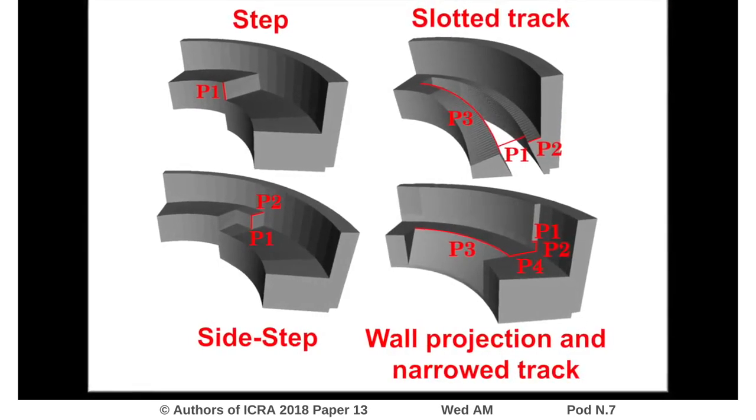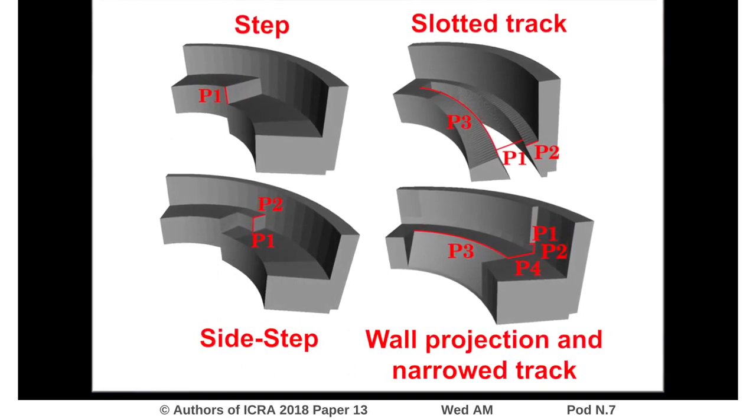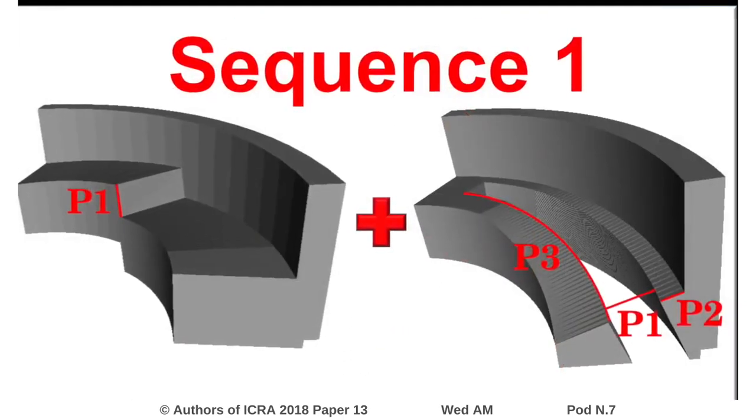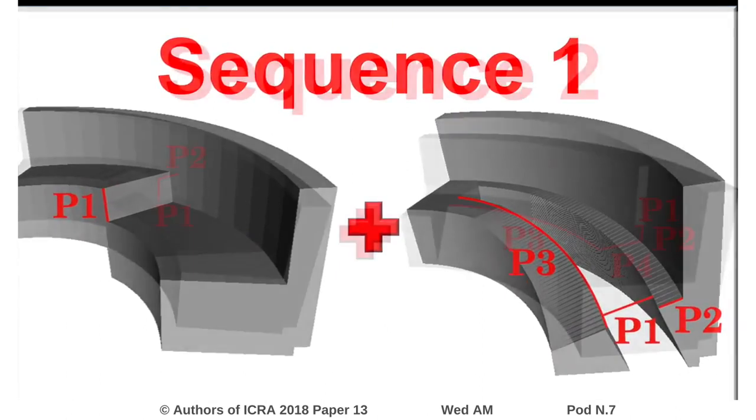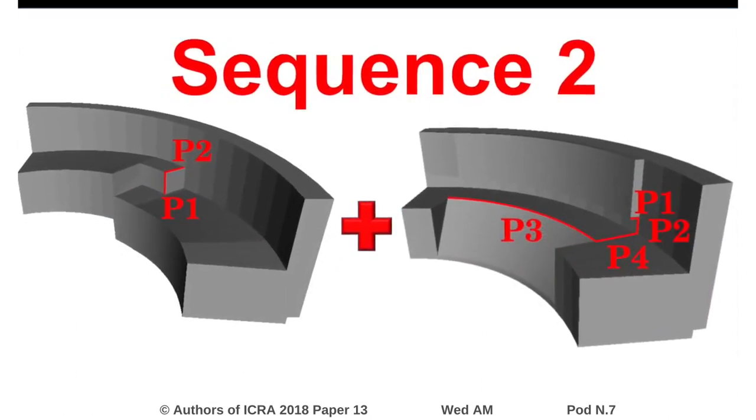The optimization is used to optimize four traps to orient an industrial part. The goal is that these traps can make up two distinct sequences where each sequence orients the part to a specific target orientation.